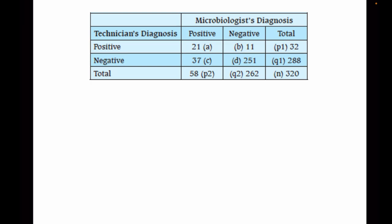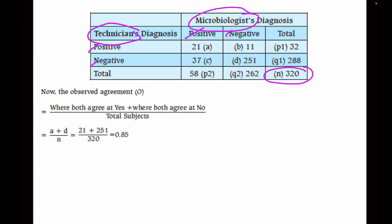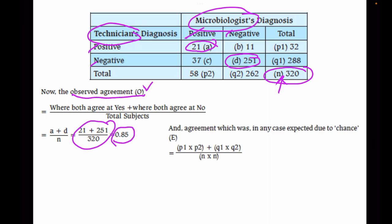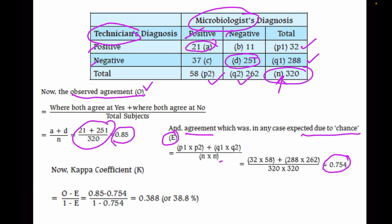Now we are moving to how to manually calculate the kappa statistic. We are comparing reliability between a technician's diagnosis and a microbiologist's diagnosis, using positive/negative outcomes. First, in kappa statistic calculation, we calculate the observed agreement — where both agree as yes and where both agree as no — in the numerator, with total subjects in the denominator. This gives an observed value of 0.85. Then we calculate expected agreement — the agreement expected to occur by chance — using the formula (p1×p2 + q1×q2) / (n×n), which gives 0.754. The kappa coefficient is then calculated as (observed − expected) / (1 − expected), which gives 0.388, meaning 38.8% level of agreement.